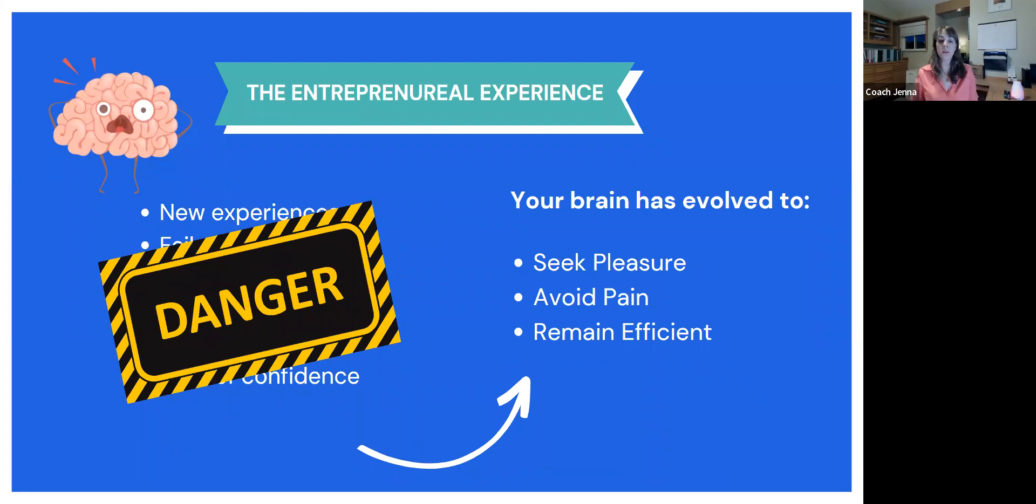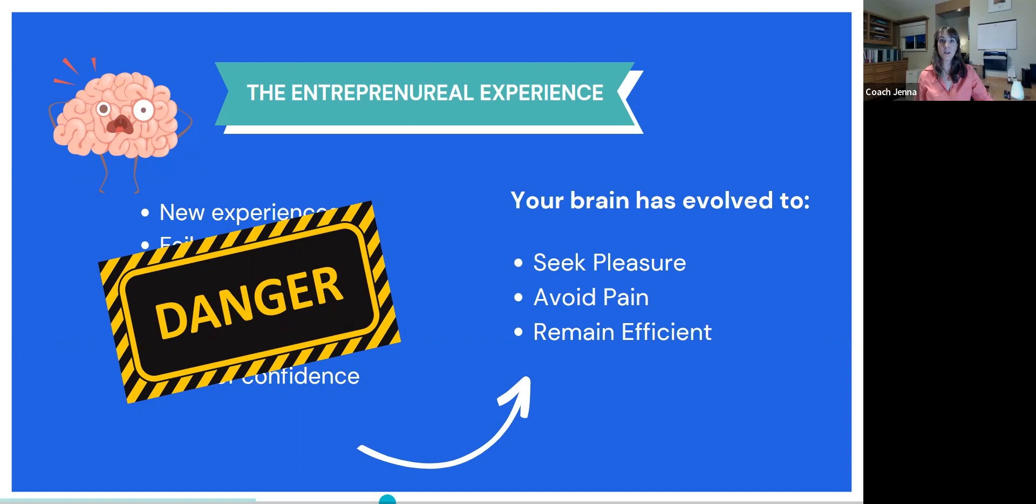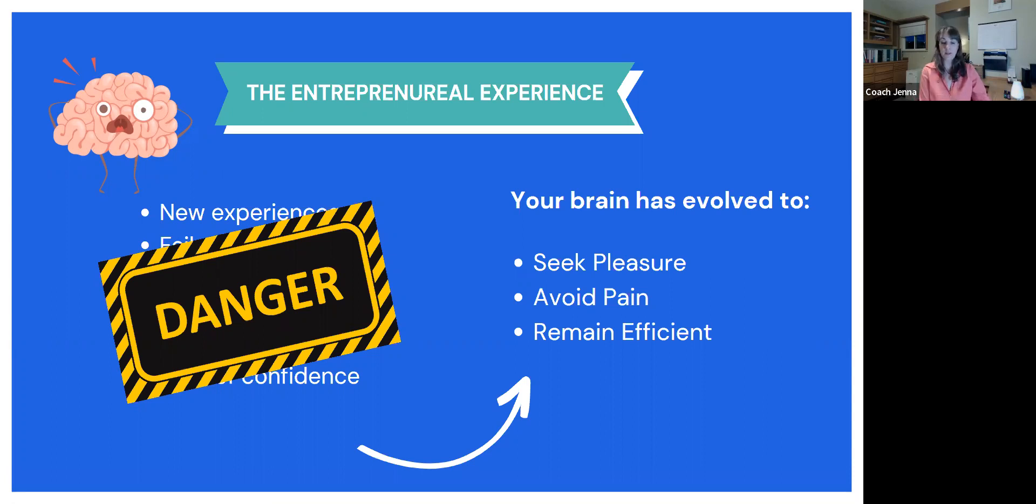Because being an entrepreneur is the opposite of all of these things: seeking pleasure, avoiding pain, and remaining efficient. It doesn't provide immediate pleasure at all. It actually can bring up a lot of discomfort, possibly even negative emotion. And it's the opposite of staying efficient, because everything is new and cumbersome, and you're still trying to figure it out as you go along. So your brain literally reads all of these things as dangerous. And at that moment, your brain doesn't understand what you're trying to do. It's not excited about you building this business and about your product and the idea that you have about what you can accomplish. It's just trying to keep you alive. And it's kind of like our reptilian brain hasn't caught up with where we are. And so it's still trying to keep us safe in the cave.